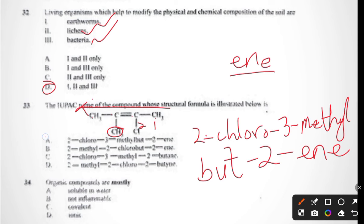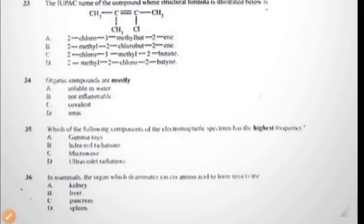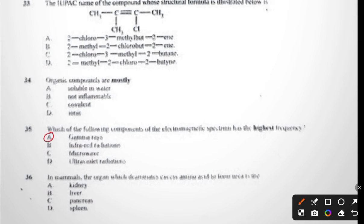Question thirty-four: organic compounds are mostly soluble in water, not inflammable, covalent, or ionic. Organic compounds are mostly C, covalent. Question thirty-five: which of the following components of the electromagnetic spectrum has the highest frequency? Gamma rays, infrared, microwave, or violet radiation. The answer to question thirty-five is A, gamma rays. Question thirty-six: in mammals, the organ which eliminates excess amino acid to form urea is the kidney, liver, pancreas, or spleen. The organ that deaminates excess amino acid to urea is B, the liver.